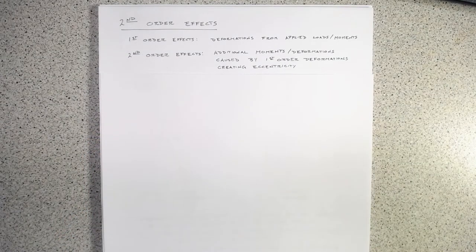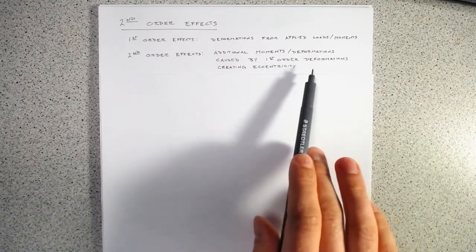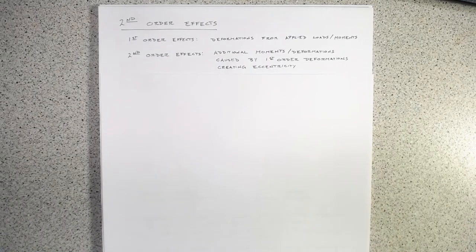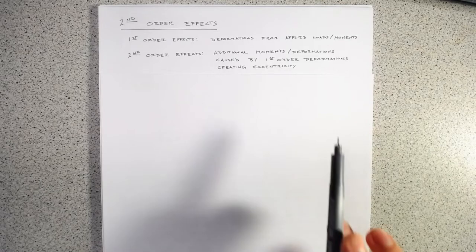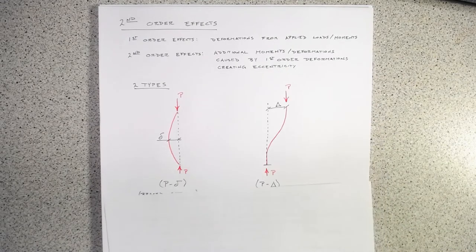In contrast, second-order effects are additional moments and deformations which are caused by an eccentricity created by the deformations from the first-order loads which were applied. It's really this eccentricity, and the internal forces being misaligned with the applied loads, that creates these second-order effects and really just boosts up the moments and the deformations. There are really two main kinds.